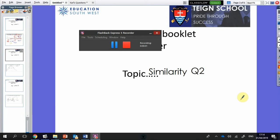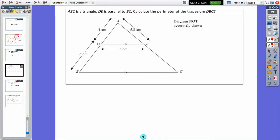I'm back with similarity question two. So question two. Another question where I'm going to think about ABC is a triangle, DE is parallel to BC.